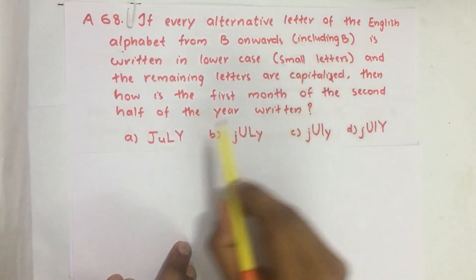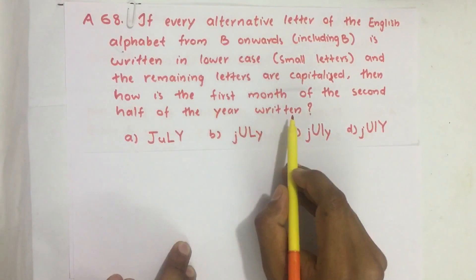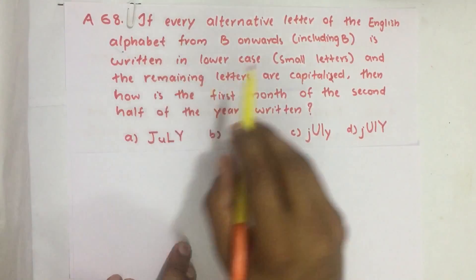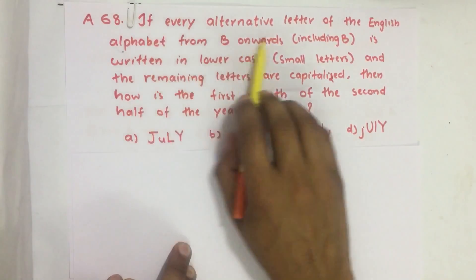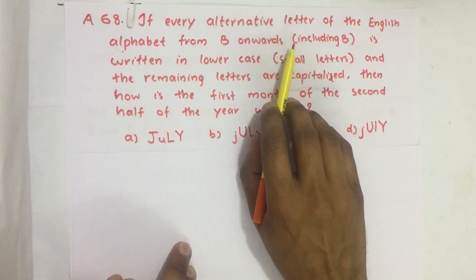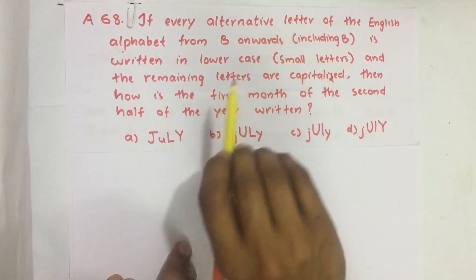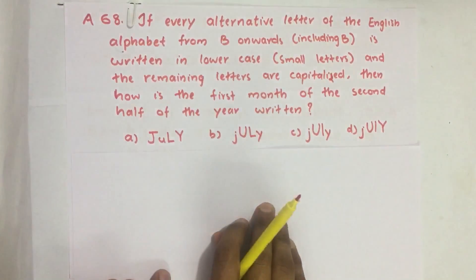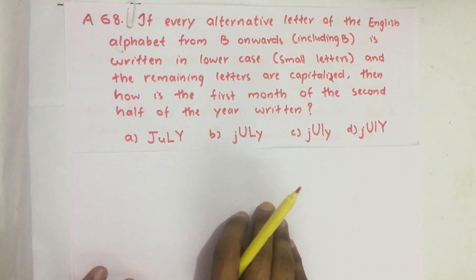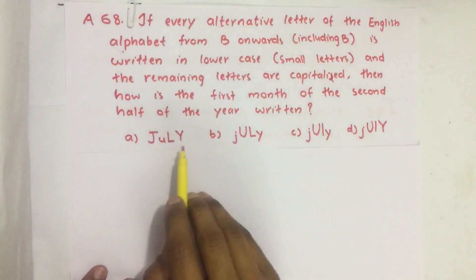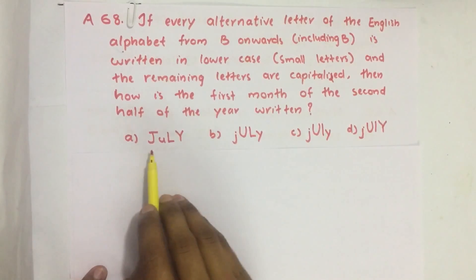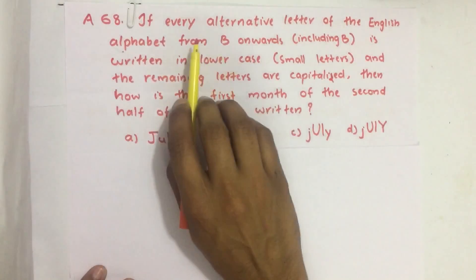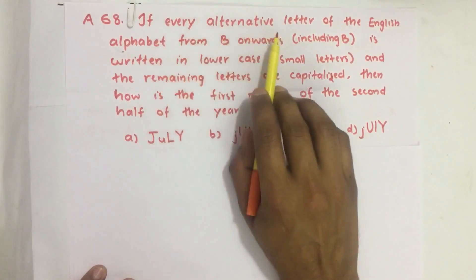The first month of the second half of the year means it is July. We have four options here, so let's see how July will be written.